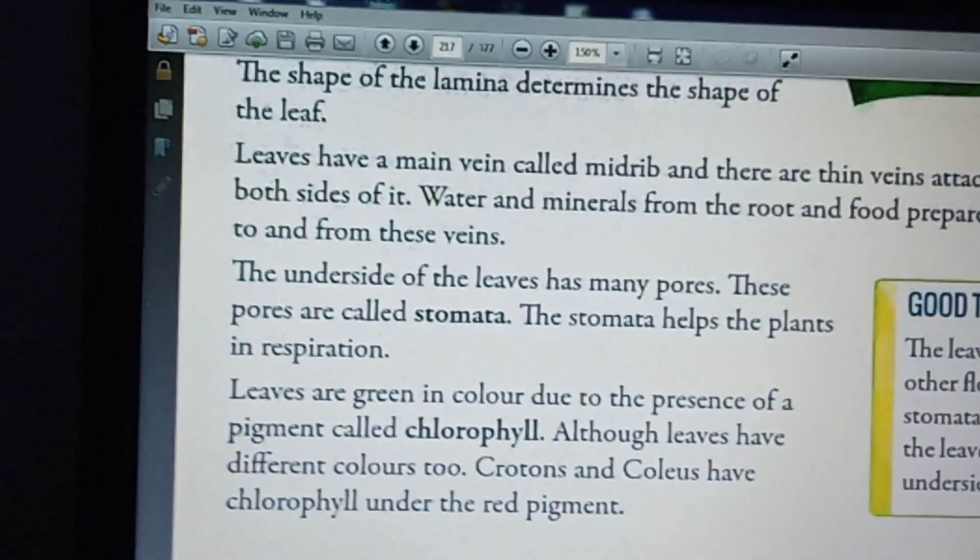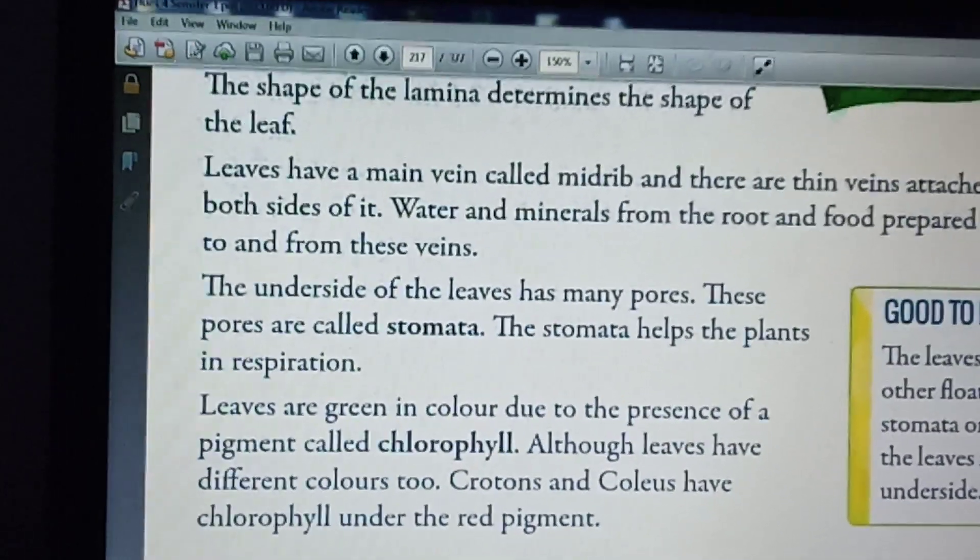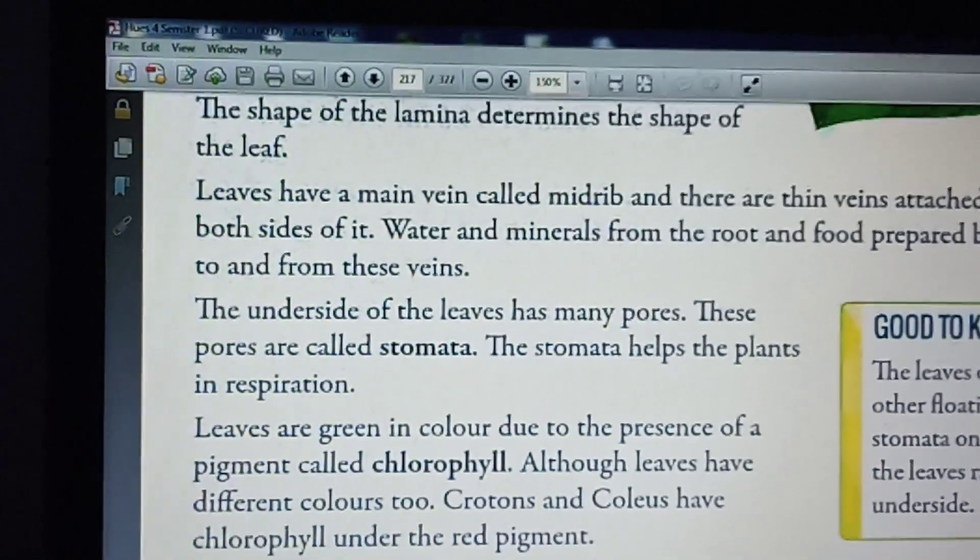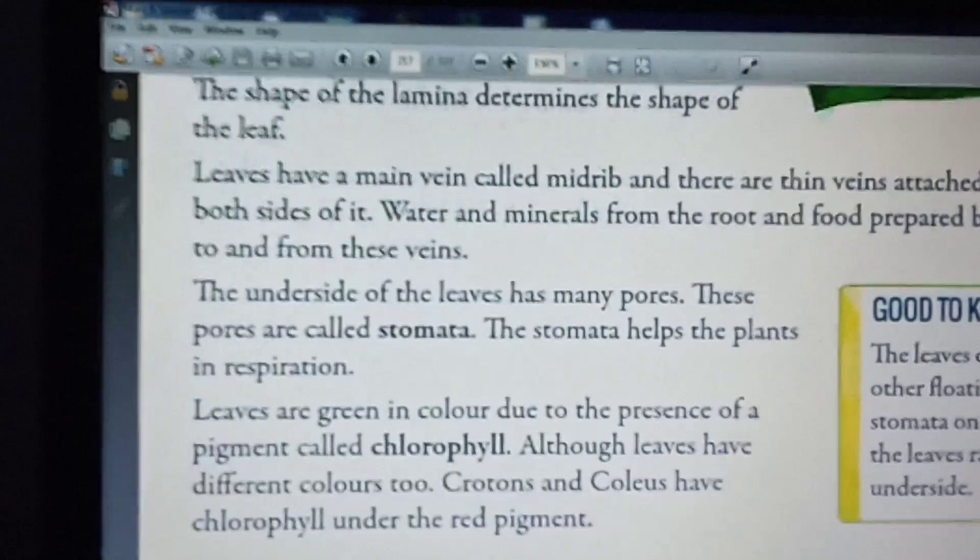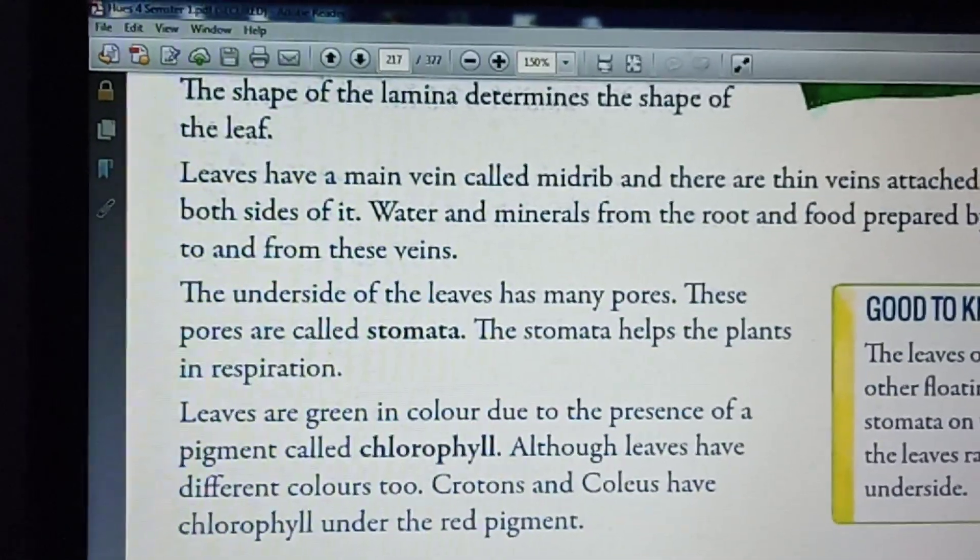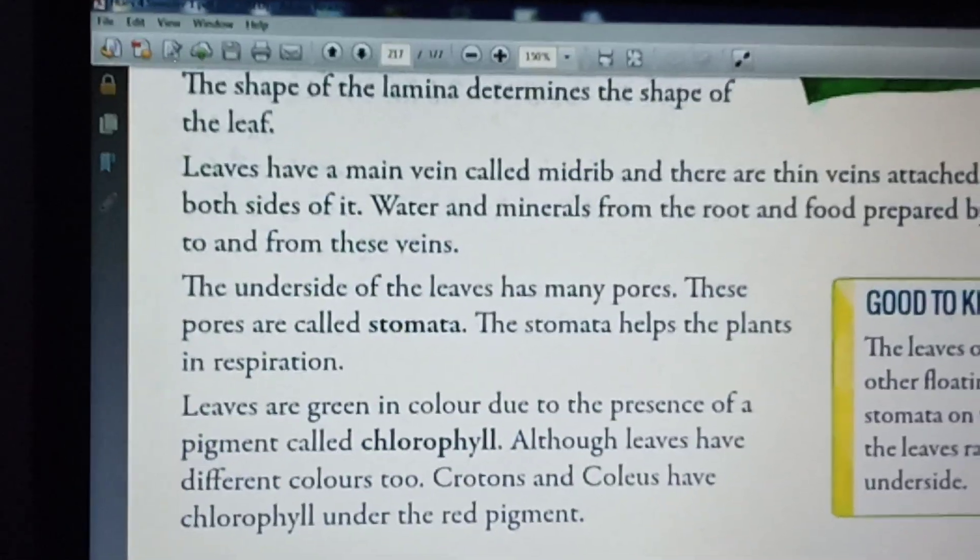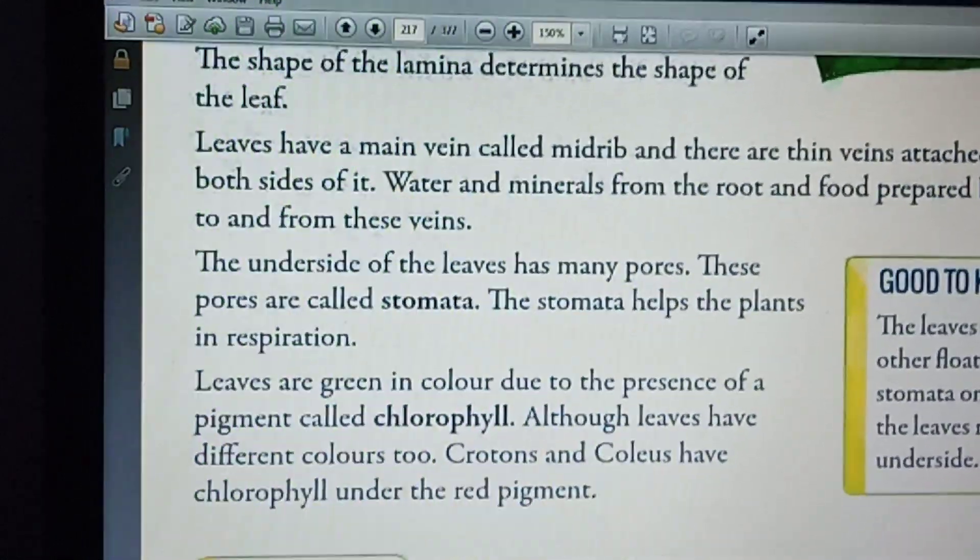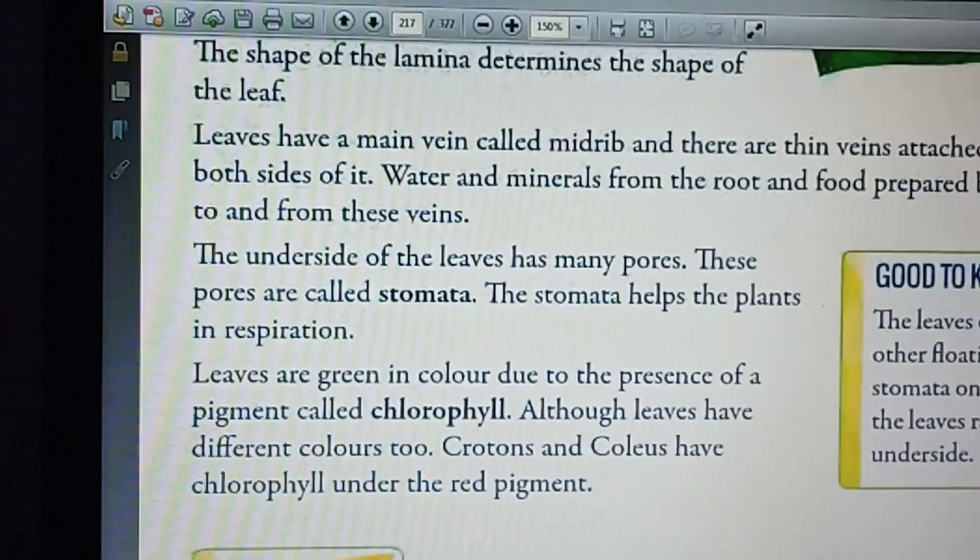Leaves are green in color due to the presence of a pigment called chlorophyll. Although leaves have different colors too, crotons and coleus have chlorophyll under the red pigment. Both the plants, crotons and coleus, are garden plants.